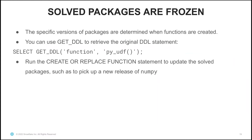Something to keep in mind when you create Python UDFs is that the solved packages are frozen. This means that when you create a Python function, the specific versions of packages are determined at that point and will not change even if new packages are released. You can use the GET_DDL statement to return the original DDL that you used. If you run the CREATE OR REPLACE FUNCTION statement that is returned, it will update the solved packages to pick up a new release of NumPy, for example.